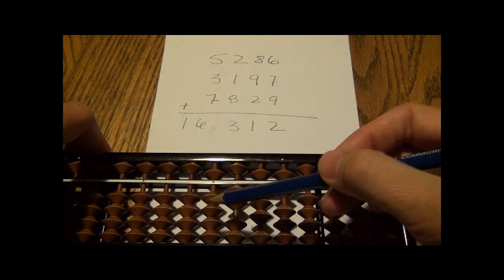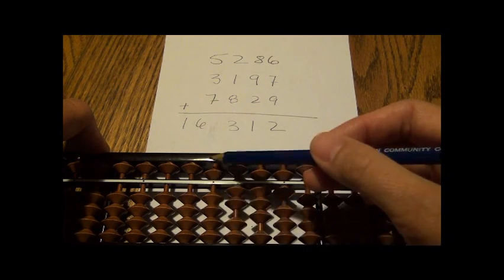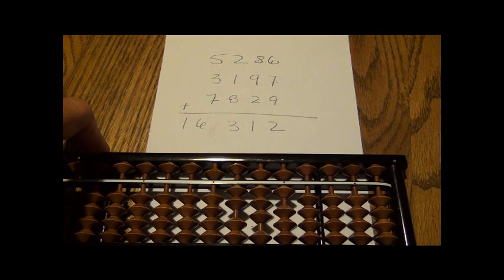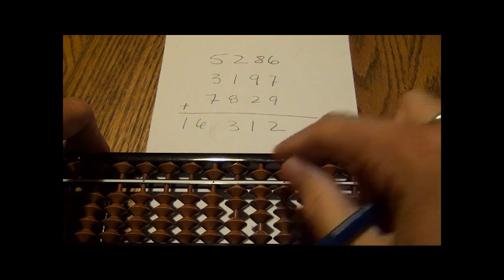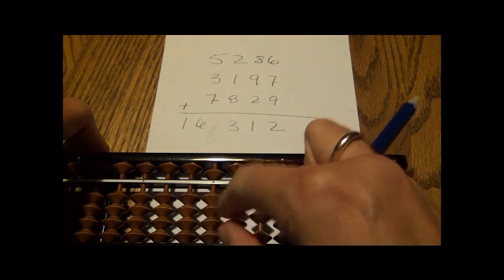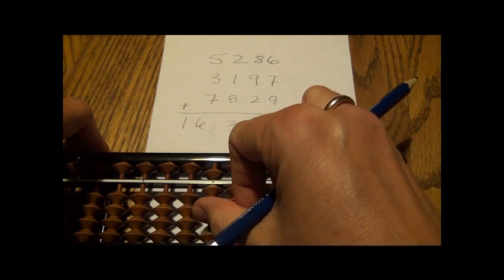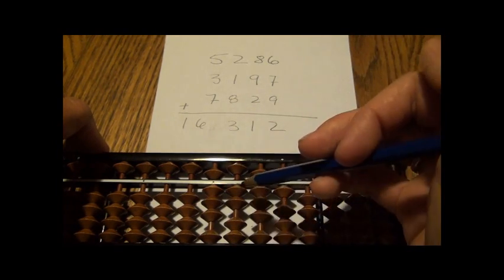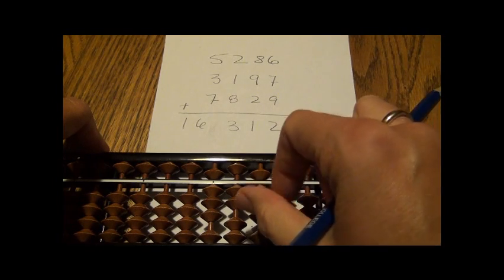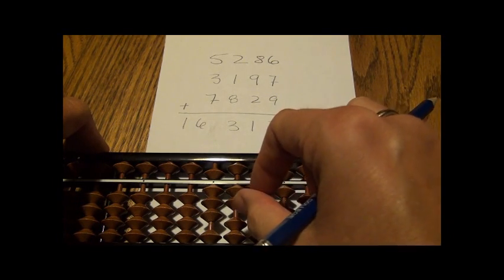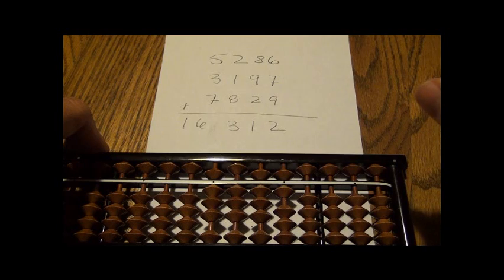So we're going to be adding 3,197. I already have a five here. I have three beads I can move, so I move those up for the three. I'm going to add a 100 here, so one on the 100s rod, I have one bead I can move up like that.